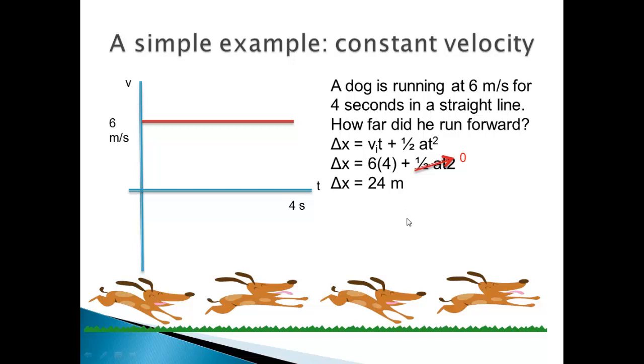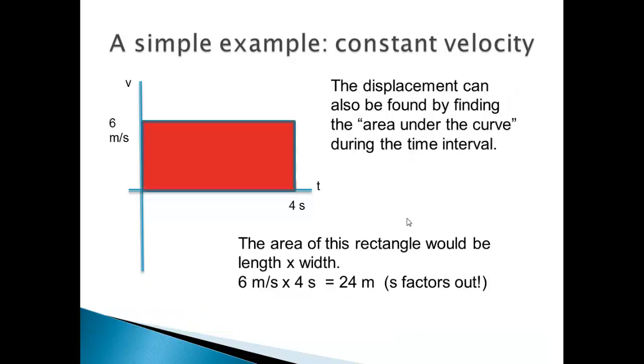But you can solve the same problem graphically if you find the area under the curve, which is a little misleading since in this case there's obviously not a real curve but a straight line, but that's what it's called. And so, here we have a rectangle of height 6 and width 4, because we're looking at the whole motion, and to find the area of that rectangle is just the length times the width, so we get 24 meters, and you notice how the units, the seconds cancel out.